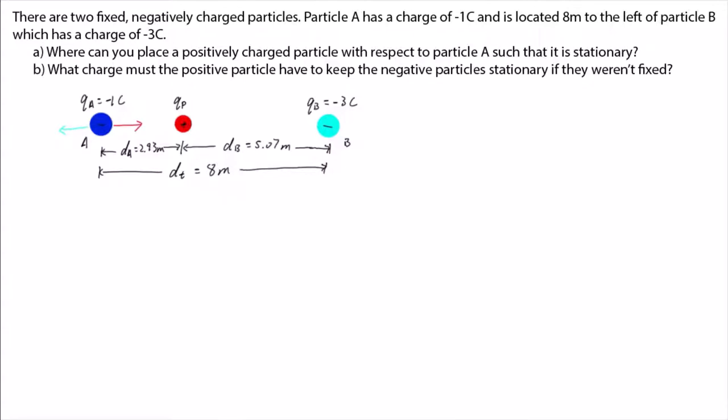Now, for particle A to remain stationary, it must have a net force of zero acting upon it. FB pushes A to the left, while FP pulls A to the right. So a net force of zero is certainly possible.